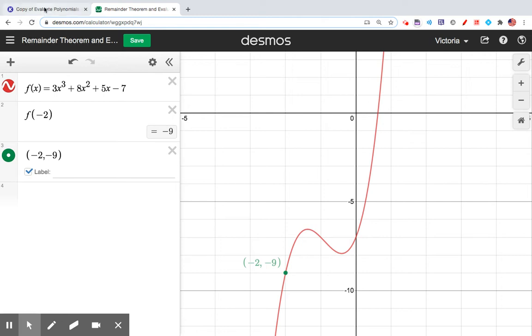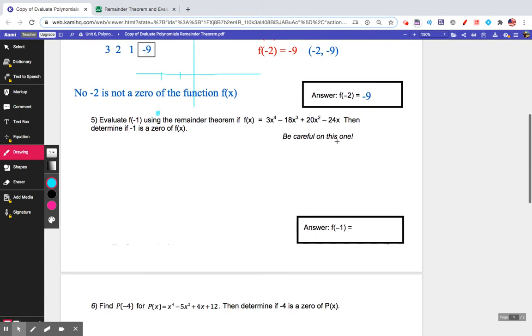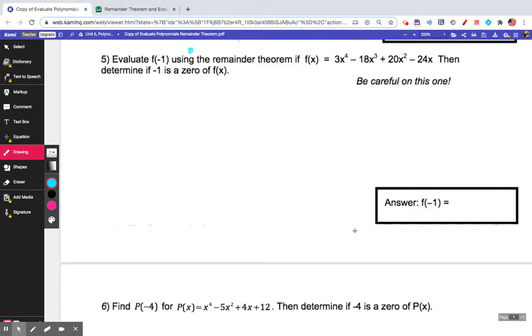Now what I want to do is go on to the next example. This time, instead of evaluating the function the old fashioned way, I want to just use synthetic division. So let's do that together. It says evaluate f(-2) using the remainder theorem. Let's grab a text box and write all of these coefficients down.